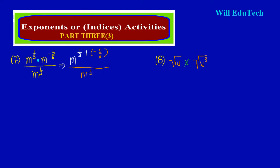Remember when working with directed numbers: since we have a positive and a negative sign clashing, the negative sign is always dominant when you have two different signs clashing. In this case the negative sign is dominant over the positive sign. So really what I have is m raised to the 1/3 being subtracted — I would have to say subtract 5/6.